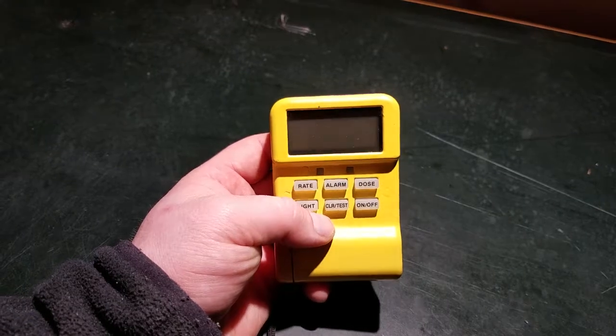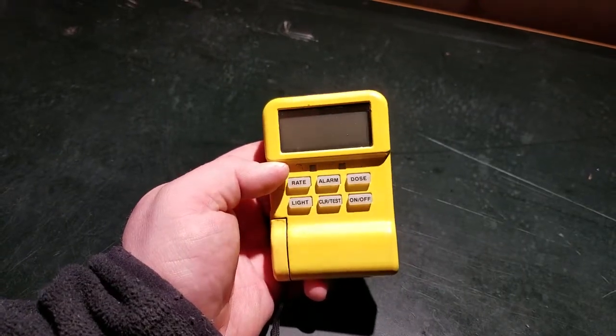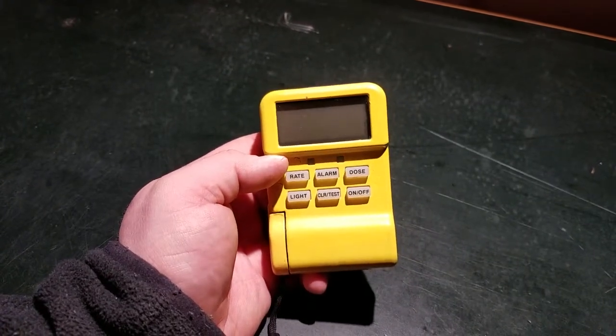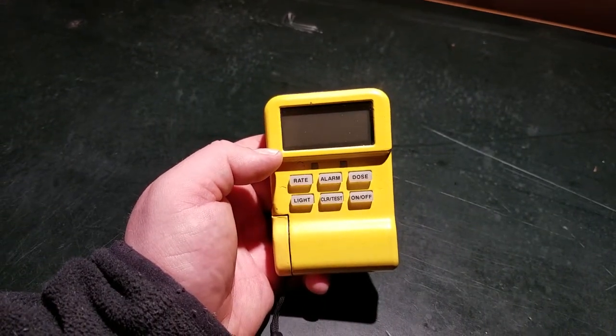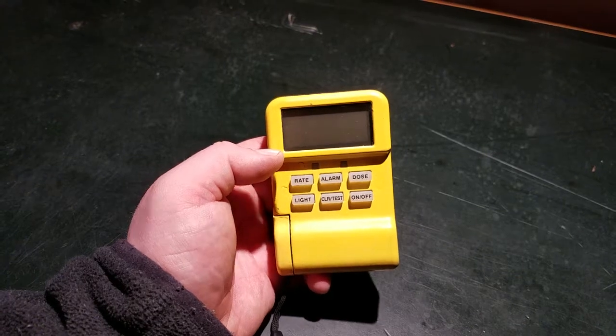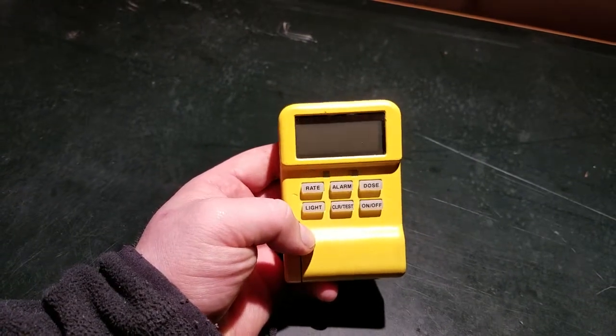The model numbers for the MRAD are interesting. The first digit is the color, the second digit is whether or not it has a buzzer, and the last digit is the units it displays. The three goes in micro roentgens per hour or in roentgens.